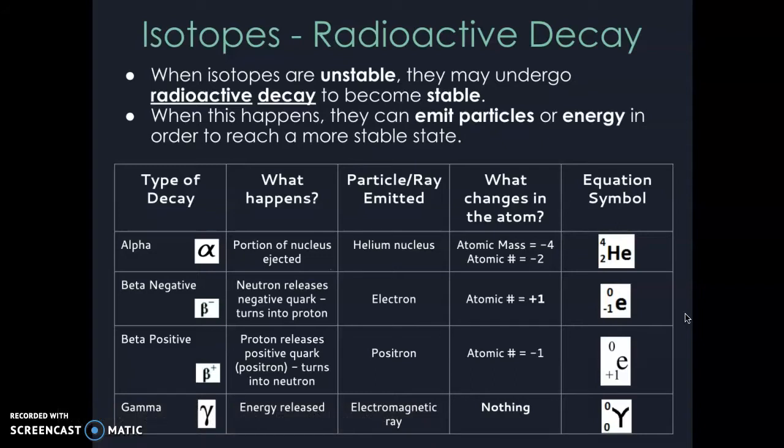There are four major types of decay: alpha decay, beta negative decay, beta positive decay, and gamma decay. Alpha decay is the least dangerous and the biggest. Alpha decay is essentially a helium nucleus.